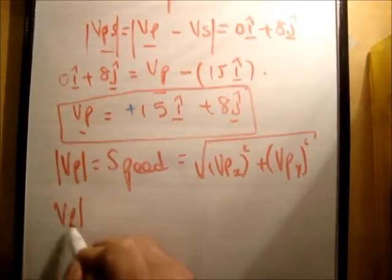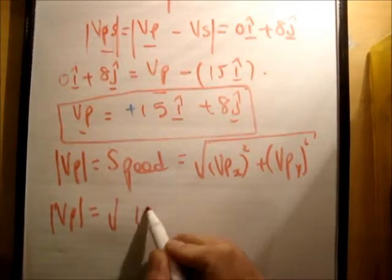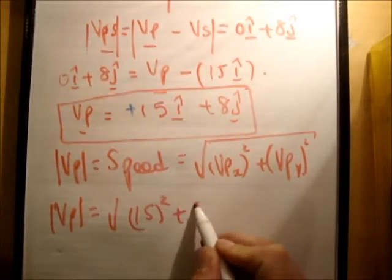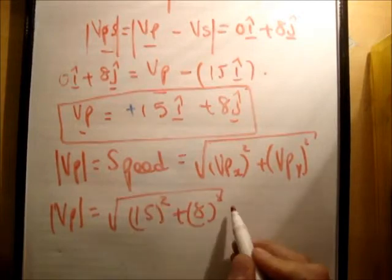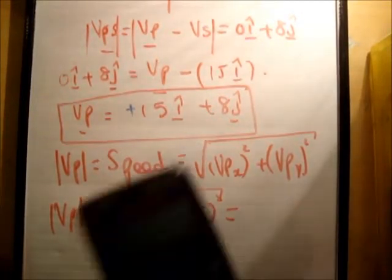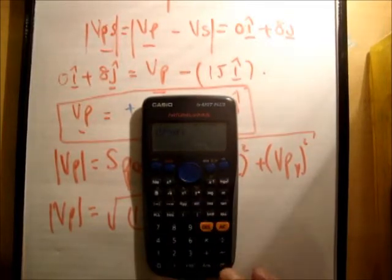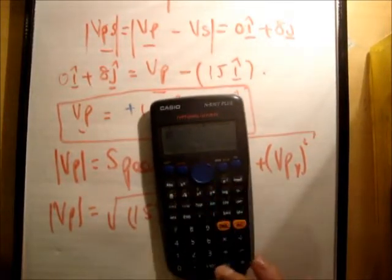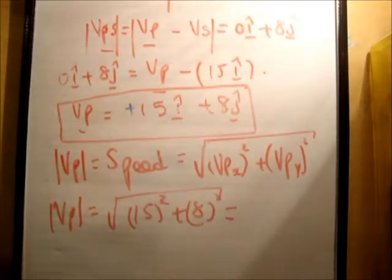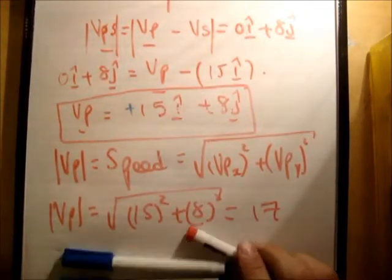So, that turns out to be 15 squared plus 8 squared, all rooted. And I'll just plug that into my calculator. So, we get 15 squared plus 8 squared, giving 289. And if we root that, we get 17 meters per second is the magnitude of the velocity of the passenger.